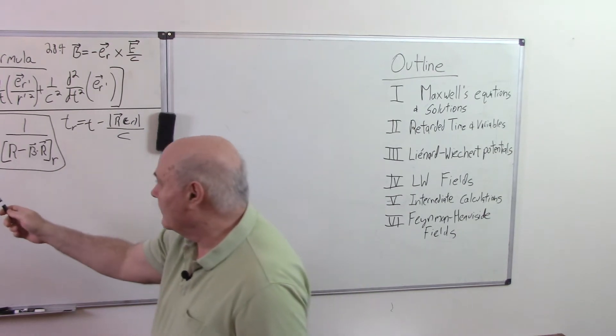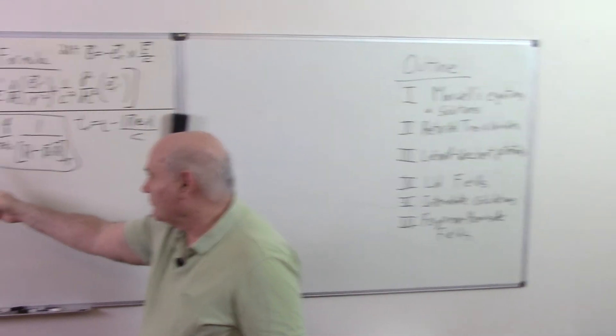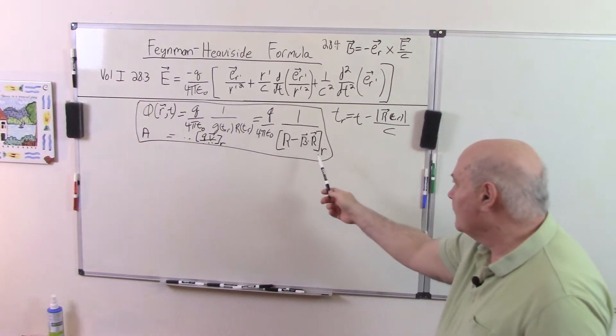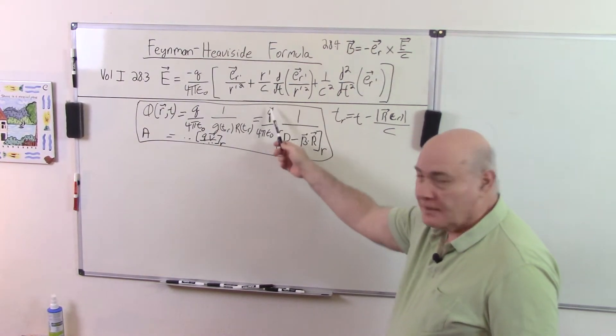Welcome back to our derivation of the Feynman-Heaviside formula which I've kept up here like this. Last time we derived the Lienard-Wiechert potentials which we're actually not going to use but we're going to use an intermediate result. I've left that up here as well.